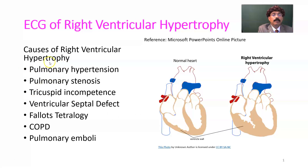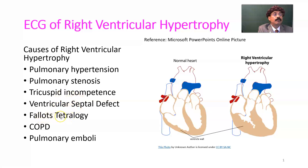What are the causes of Right Ventricular Hypertrophy? Right Ventricular Hypertrophy may be a consequence of pulmonary hypertension, pulmonary valve stenosis, tricuspid incompetence, and ventricular septal defect. It is also associated with Tetralogy of Fallot, which has four components: pulmonary stenosis, ventricular septal defect, dextroposition and overriding of the aorta, and right ventricular hypertrophy.